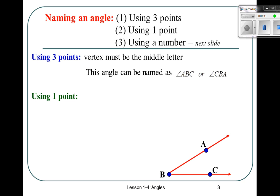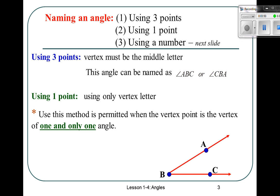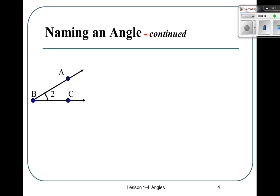We can also use one point. You use only the vertex letter. It's going to be the letter B. You can only use this method when the vertex point is the vertex of one and only one angle. This angle is called angle B. Fill in number four on your piece of paper.